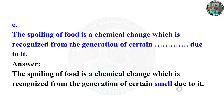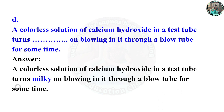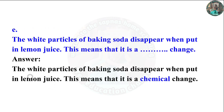A colorless solution of calcium hydroxide in a test tube turns milky on blowing into it through a blow tube for some time. The white particles of baking soda disappear when put in lime juice. This means that it is a chemical change.